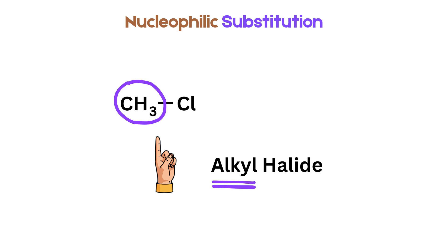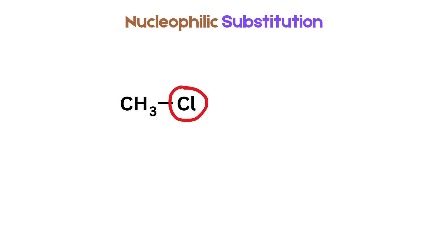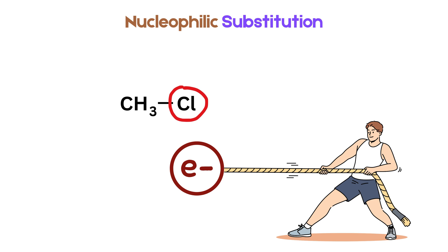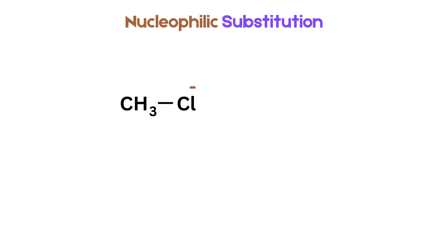This means a carbon atom bonded to a halogen like chlorine. The halogen, being more electronegative, pulls the shared electrons toward itself. As a result, the chlorine becomes slightly negative and the carbon becomes slightly positive.